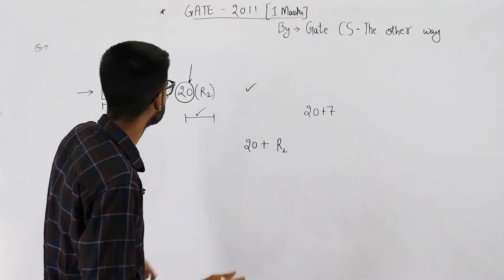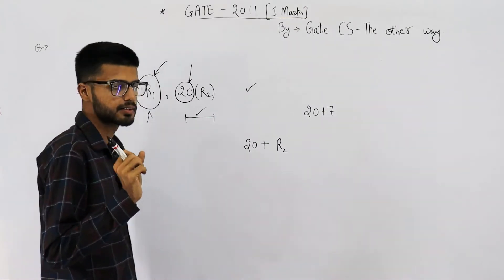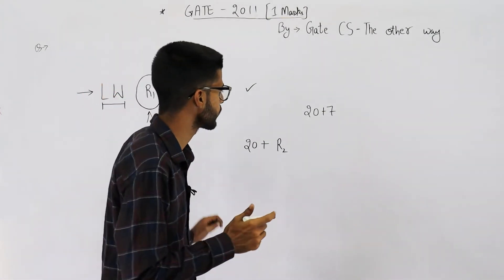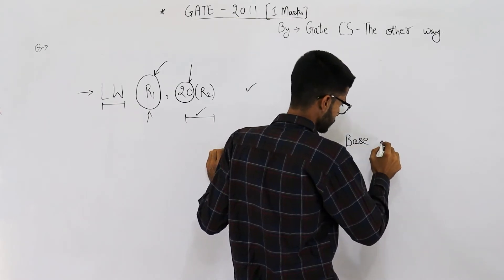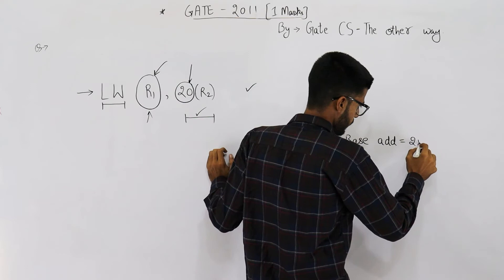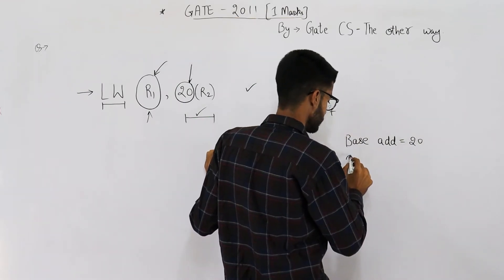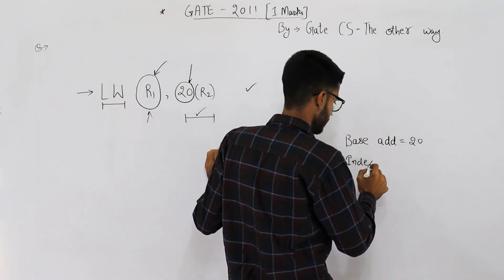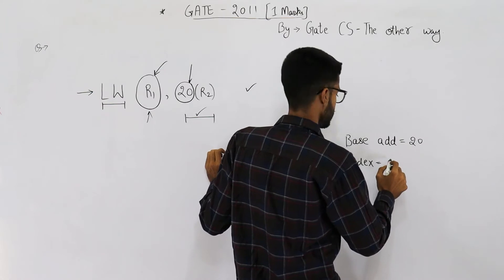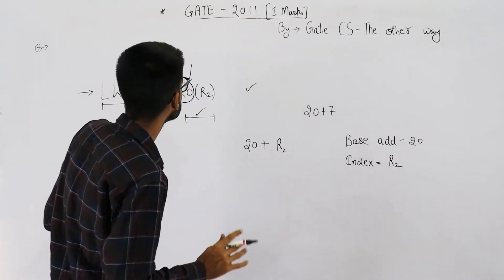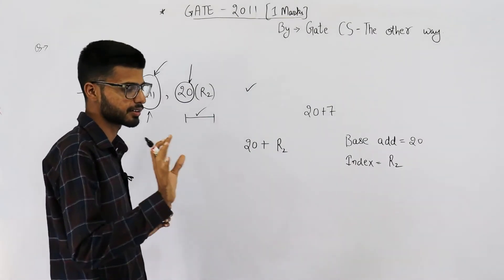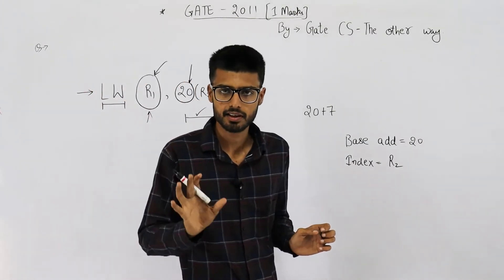So the word constant indicates this can be a base address. Base address equal to 20. Second thing is index is specified by this register R2. So this is indexed addressing mode or base indexed addressing mode.